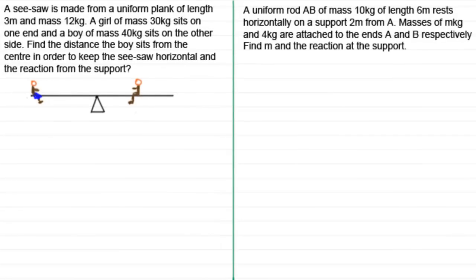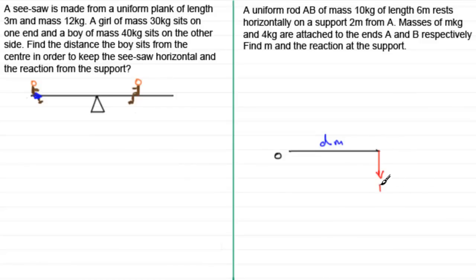Welcome to the second video in my series on moments. In the first video, we looked at a point O with a force acting perpendicular to O at a distance d meters. If that force was F newtons, then the moment of that force about O was equal to the force multiplied by the distance: F times d.